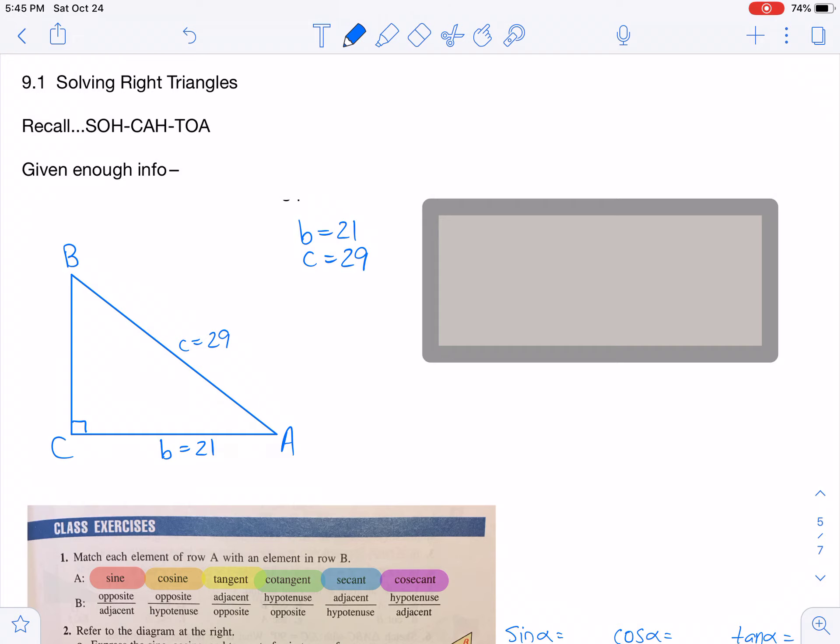Hopefully you remember SOH CAHTOA and everything that that stands for. Sine is equal to opposite over hypotenuse, cosine is equal to adjacent over hypotenuse, and tangent is equal to opposite over adjacent. If we are given enough information, we can solve for anything that we have not been given. And in this case, the information that you need to have is either two sides of a right triangle, or one angle besides the 90 degrees, and one side.